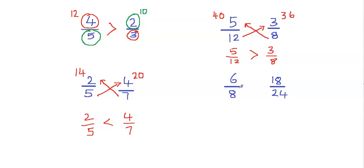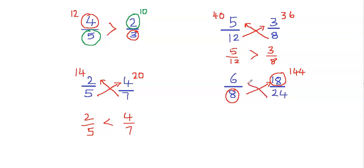Let's take a look at the last example. We're going to multiply the bottom number of one fraction with the top number of the other fraction, so that means we're going to multiply 8 by 18. 8 times 18 is 144, so we're going to put 144 on this side. Now we're going to multiply the bottom number of this fraction with the top number of the other fraction — 24 times 6 is also 144. Now 144 is equal to 144, so we can say that these fractions are equal. So 6 eighths is equal to 18 twenty-fourths.